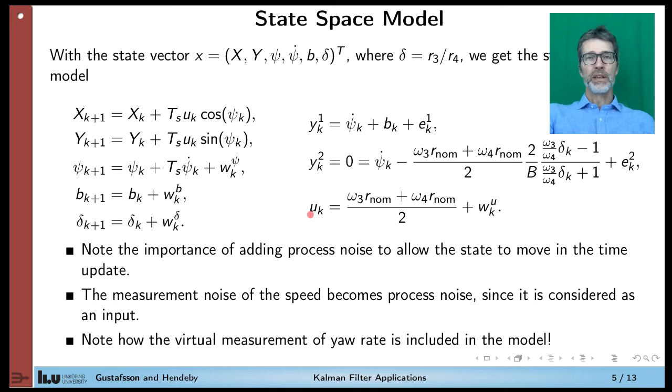You note that the input has a noise term called W, so you can see that it is to be process noise because it enters into these state equations in the time update here. Another thing to note is how to include this virtual measurement here of psi dot. So the most convenient way is to consider the measurement to be zero all the time, and that zero should be the real yaw rate minus what we compute from the wheel speeds plus some noise.